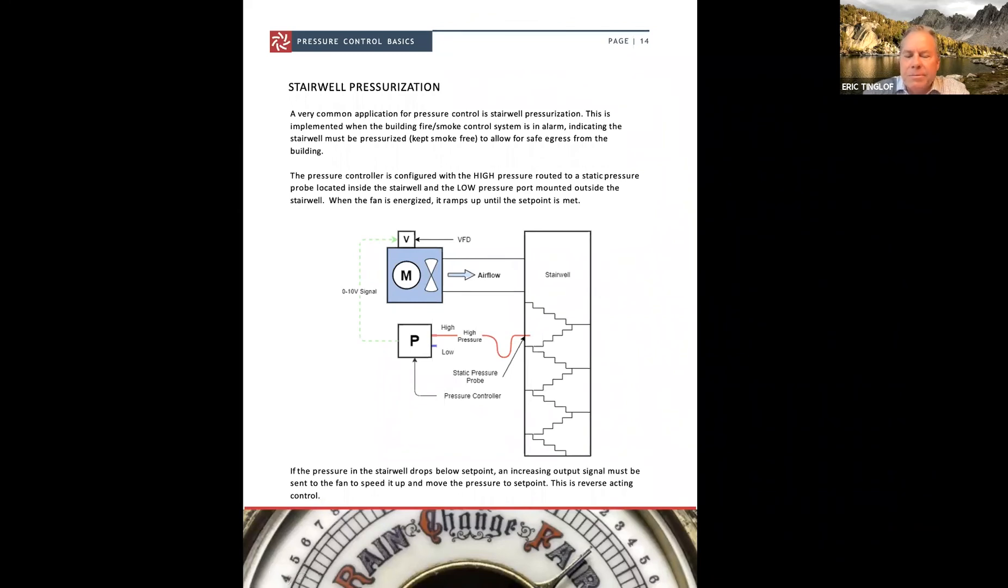Stairwell pressurization. You have the high pressure port via a static pressure probe mounted in the stairwell. We're trying to keep this area positively pressured. This is to atmosphere. So as the pressure goes down in the stairwell below a set point, then we send a signal back to the motor to speed up. Again, reverse acting control.